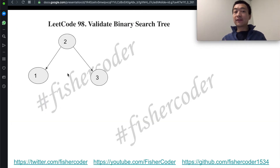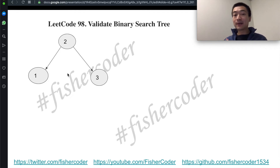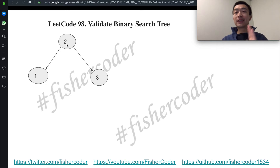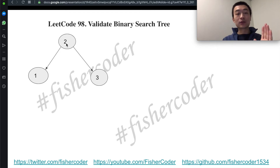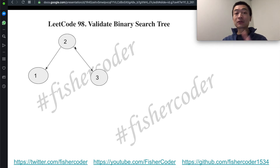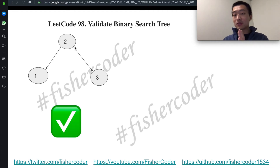For example, assume we're given this binary tree: 2, 1, 3. Is this a valid binary search tree? Yes, because the left side 1 is smaller than the node's value, which is 2, and the right side 3 is greater than the node's value. This is a valid binary search tree.